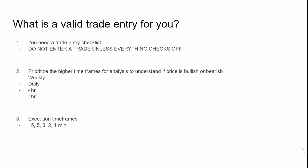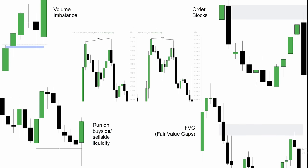Step two is prioritizing the higher time frames for analysis to understand if price is bullish or bearish. You should always know where order flow is — whether price is continuously making higher highs and higher lows, or lower lows and lower highs. To do that, you want to be doing your higher time frame analysis primarily on the weekly and daily, then the four hour and one hour. For me personally, the execution time frames I use are the 15-minute, 5-minute, 3-minute, 2-minute, and 1-minute.